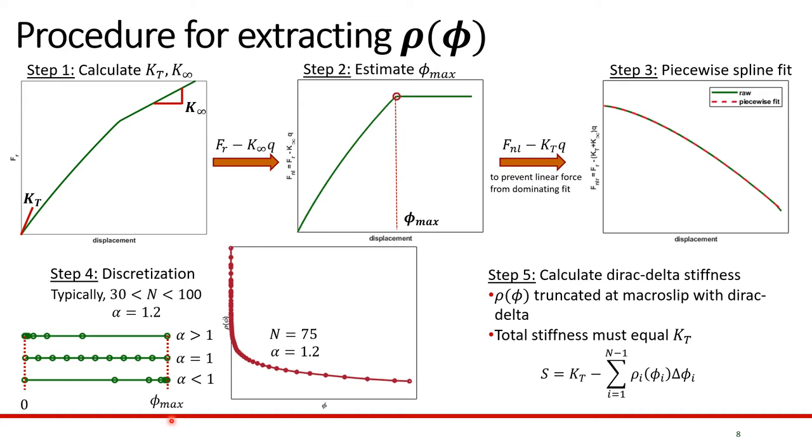Two factors need to be considered. One is the number of discretization points, typically varying between 30 to 100 based on the application. Second is alpha, which determines the density of the points from zero to phi max. A value of alpha greater than one would mean more points closer to zero at low amplitude, while a value less than one would imply higher density closer to phi max. The last step is to calculate the dirac-delta stiffness. We want to truncate the distribution function at macro slip using a dirac-delta function. The coefficient of this dirac-delta can be understood as the dirac-delta stiffness, which must be chosen such that the total stiffness equals the tangential stiffness K_T.